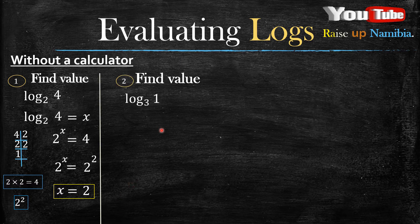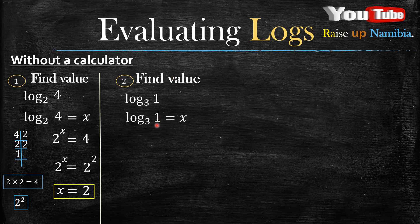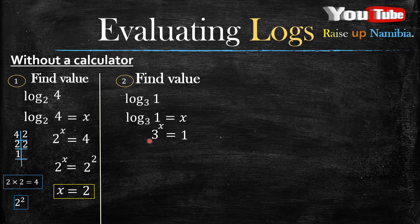Now how about when you are given something like log base 3 of 1 equals x? Same concept — you write it as equal to x and then change it into exponential form. Once you have changed it into exponential form, you want to make the bases the same.